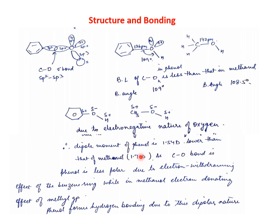So the dipole moment in phenol is less than in alcohol. The reason is that the C–O bond in phenol is comparatively less polar, because the benzene ring acts as an electron withdrawing group, whereas the methyl group in methanol acts as an electron donating group. This electron withdrawing effect of benzene reduces the polarity of the C–O bond.